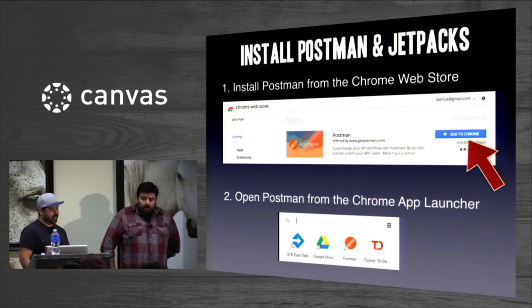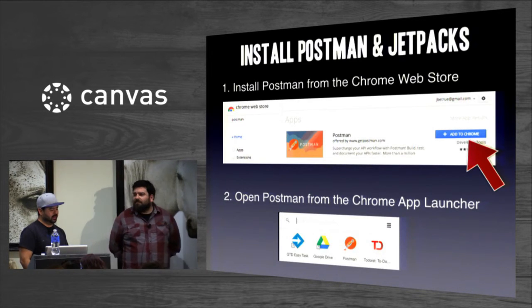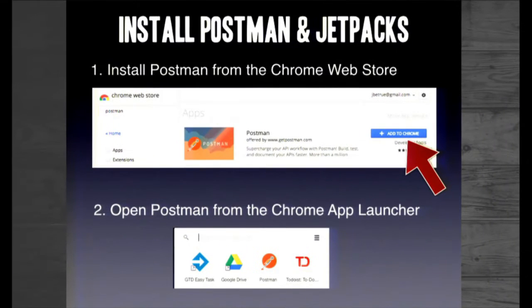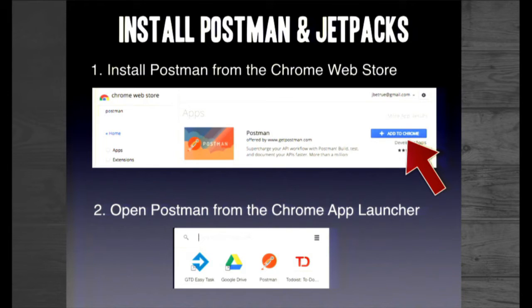Here's where things get super fun. You're going to want to install Postman, which is a super powerful API interface for Google Chrome. We don't really have time to go over all the features, but check under their page and read their discussion boards. You find this in the Chrome Web Store. If you can't find the Chrome Web Store, do a Google search for it and then search for Postman. Install it and it'll put it in something called the Chrome App Launcher.